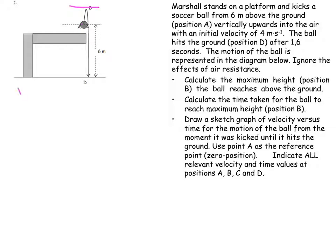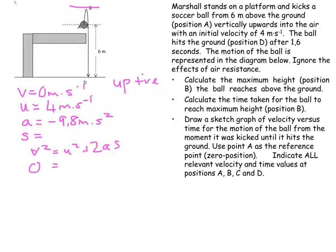Let's look at what information we have got. We know that at the top the final velocity is equal to zero. We know that Marshall sends it upwards. I'm going to take up as positive and Marshall sends that up at 4 meters per second. The acceleration is equal to downwards 9.8 meters per second squared. So I'm going to say v squared is equal to u squared plus 2as. Don't forget that the acceleration must be negative because it's downwards. And we find that the distance turns out to be 0.82 meters.